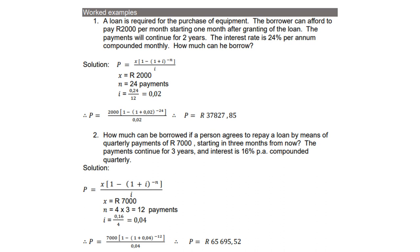How much can we borrow if a person agrees to repay a loan by means of quarterly payments of 7,000 starting in three months from now? The payment continue for three years, and interest is 16% per annum, compounded quarterly.